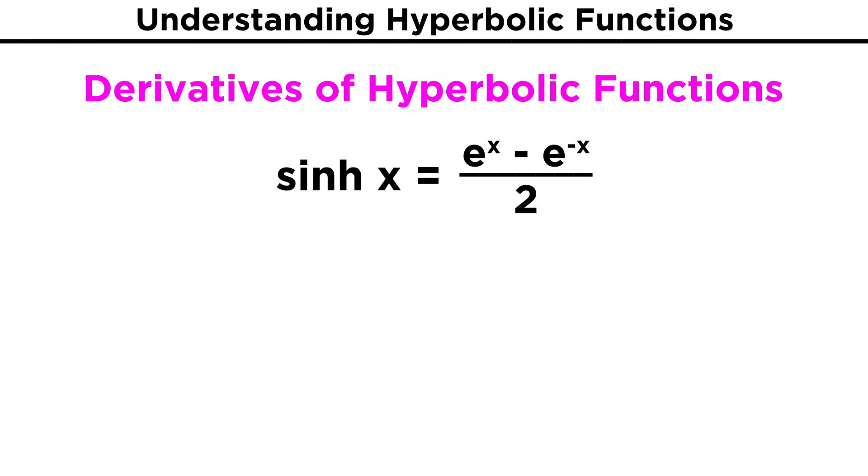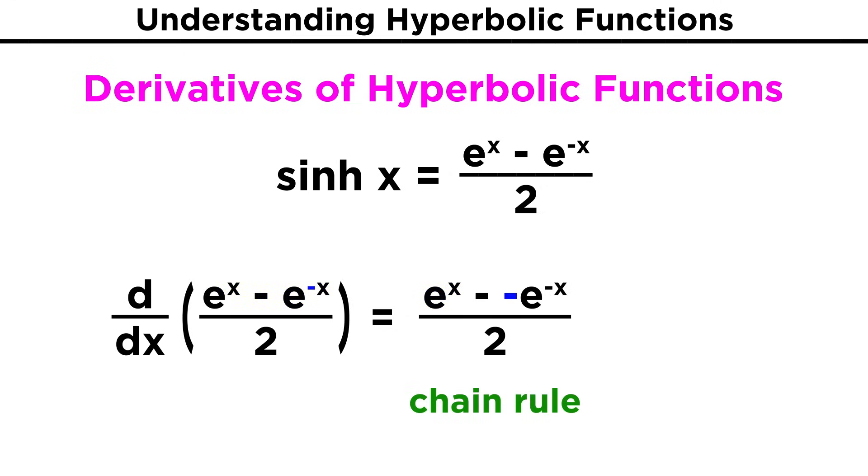This isn't too surprising if we look at hyperbolic sine and differentiate. We recall that the derivative of e to the x is e to the x, and so the only thing that will change is that for the second term, we use the chain rule, and bring the negative sign from the exponent down here to cancel out the other one.